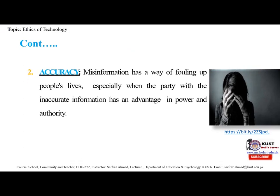The second ethical issue is accuracy. What do we mean by accuracy? The condition or quality of being true, correct or exact; freedom from error or defect; precision or exactness; correctness. In chemistry and physics, accuracy refers to the extent to which a given measurement agrees with a standard value for that measurement — compare precision.